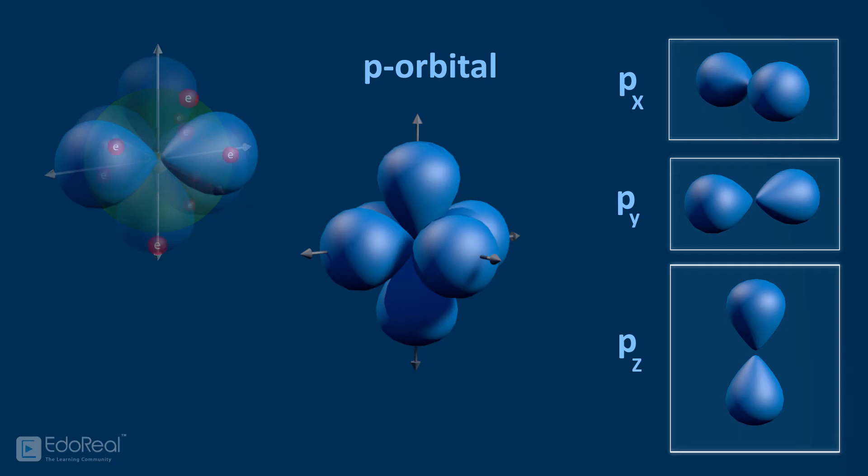As p orbital comprises px, py, pz, it is also called as p subshell. The three pairs of electrons contain equal amount of energy as they cover similar shapes. Each pair moves only in their respective space. For example, electrons found in px orbital can't jump to py, pz orbitals, and vice versa.